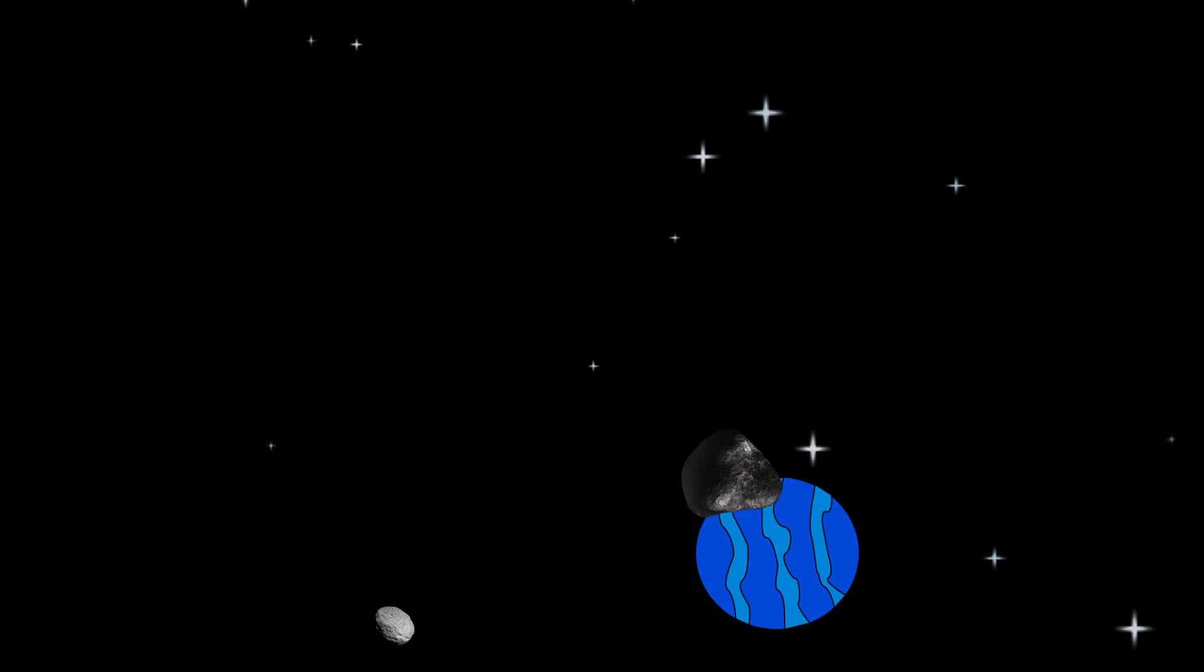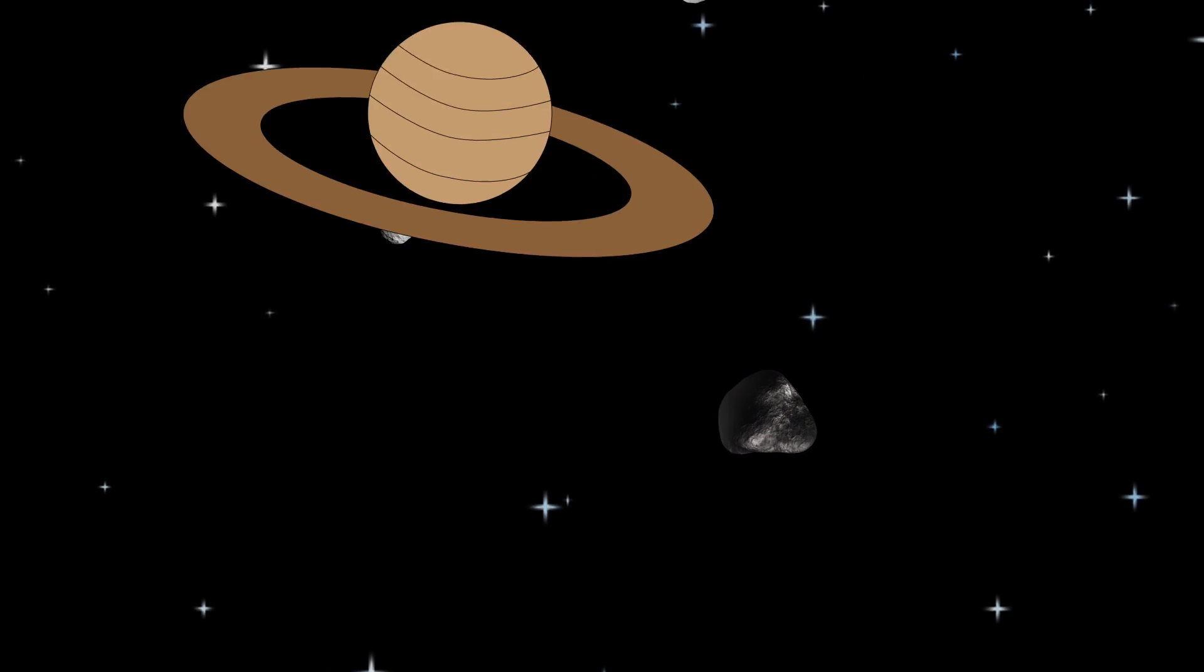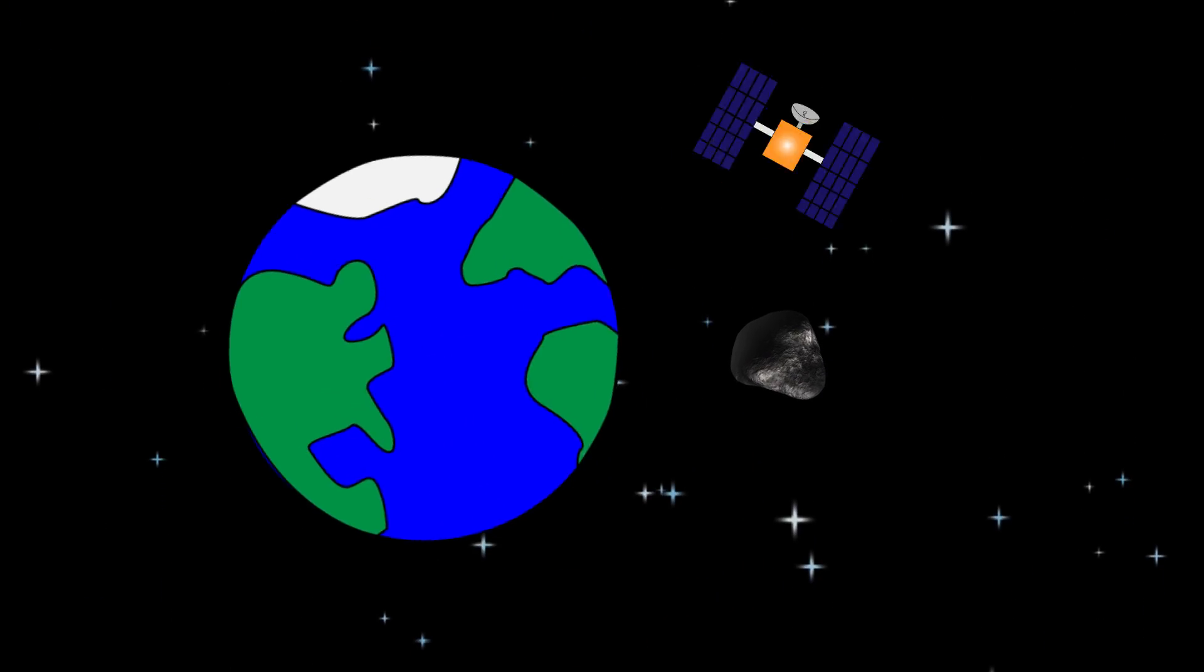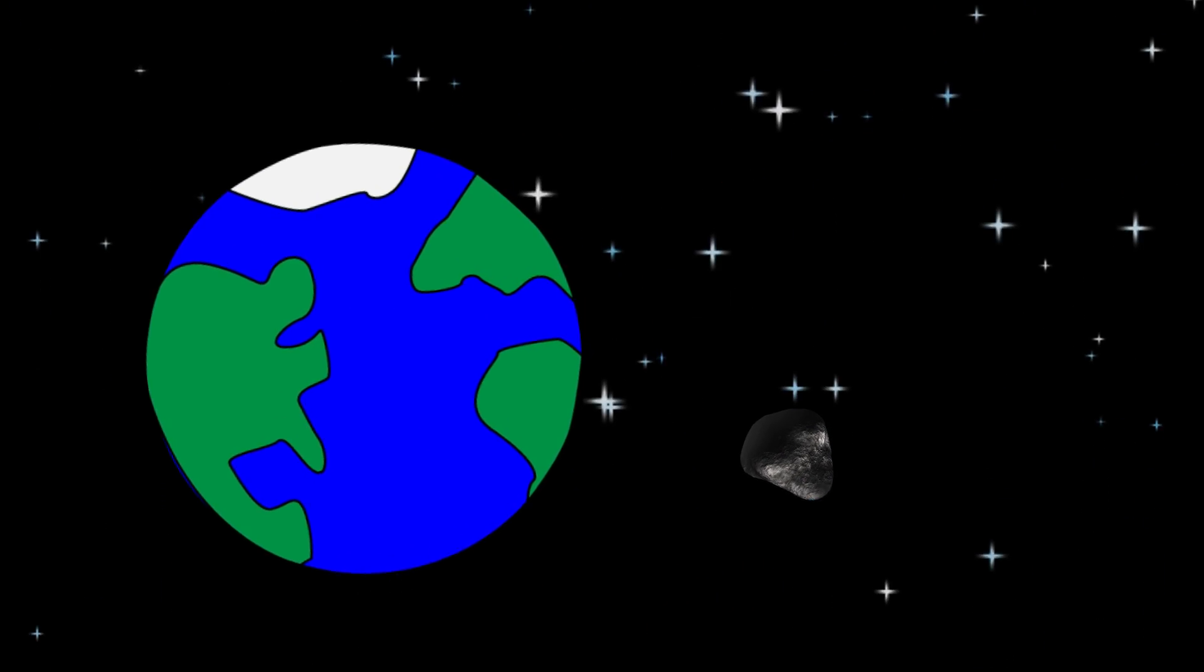Our solar system is filled with asteroids. While most like to hang out in the asteroid belt, roughly between the orbits of Mars and Jupiter, many have orbits that come close to or sometimes even impact Earth.